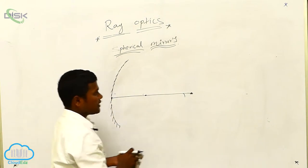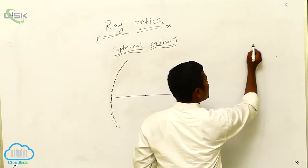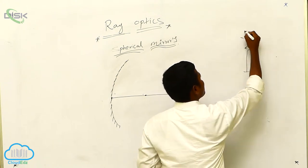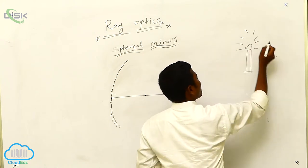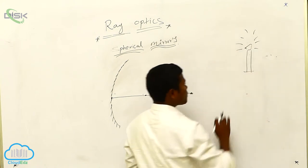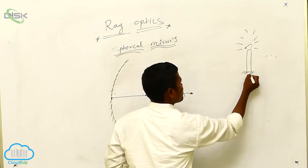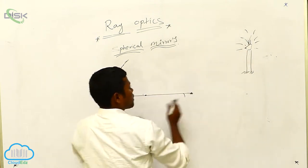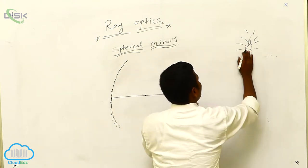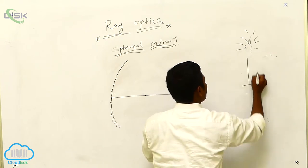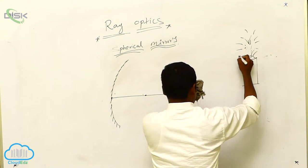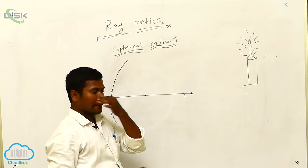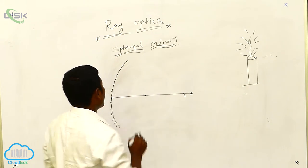Let us take a source — that may be a candle, or a candler, or else you can consider the sun also. From the source, what we are getting? We are getting light.